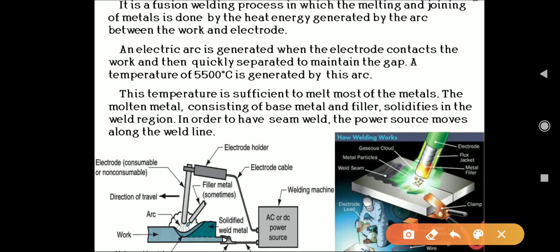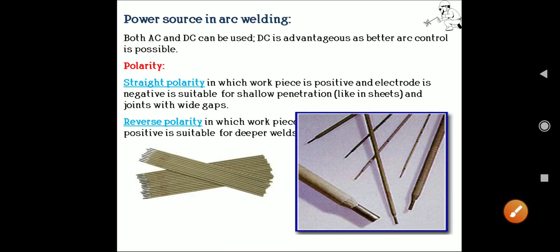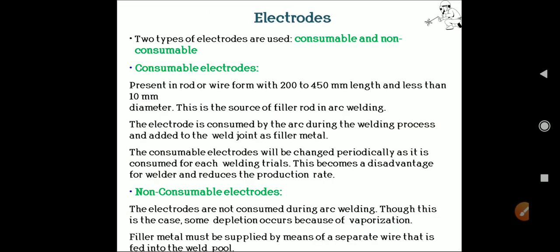In arc welding, both AC and DC power can be used. Most of the time DC is used for better arc control. There are two types of polarity: straight polarity, in which the workpiece is positive and the electrode is negative — suitable for shallow penetration such as sheets and joints with wide gaps — and reverse polarity, in which the workpiece is negative and the electrode is positive, suitable for deeper welds.